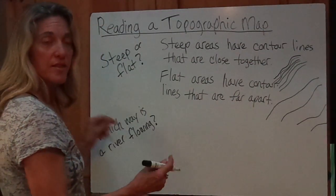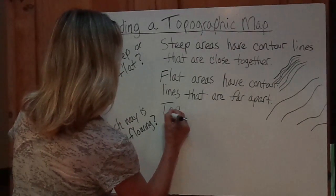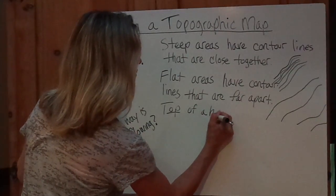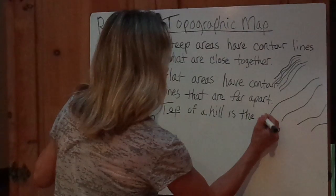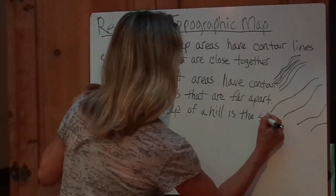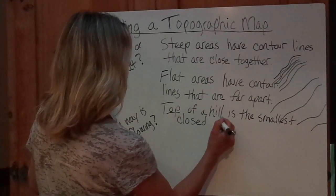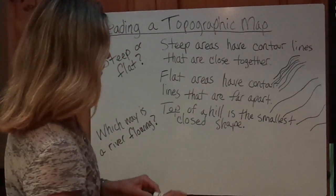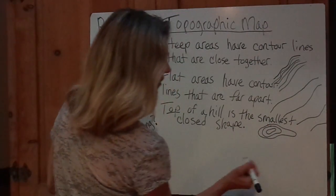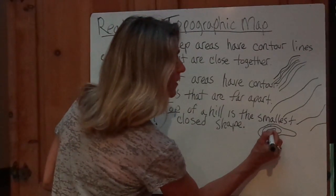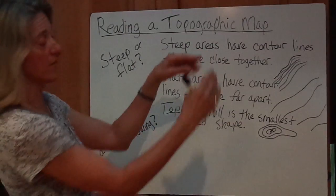If you have a mountain top, you'll see circles going to the smallest circle. The top of the hill is the smallest closed shape. So if you see concentric closed shapes on a contour map, the very top of the hill is the smallest one — X marks the spot — because the highest elevation is just a little point at the top.